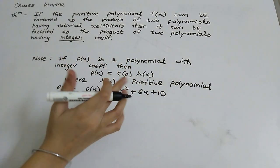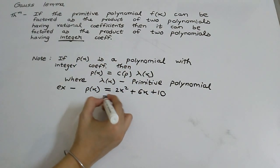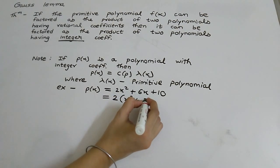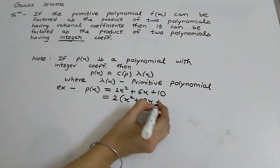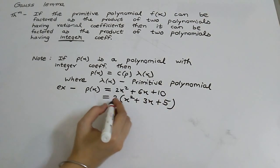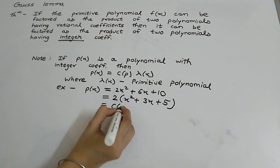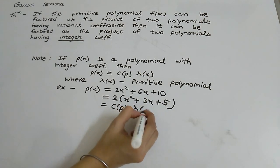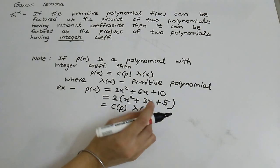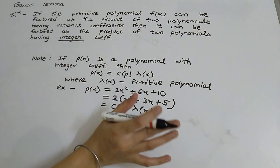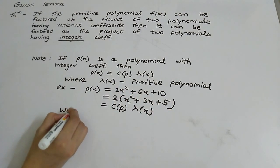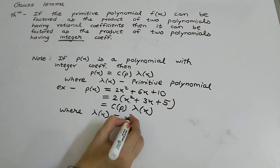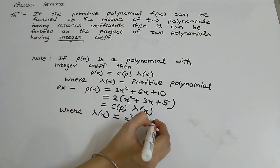We can say that p(x) is a polynomial with integer coefficients. Now p(x) can be written in this form — we can take out 2 as common, giving p(x) = 2·(x² + 3x + 5). So here we take 2 common and this remaining polynomial λ(x) equals x² + 3x + 5.